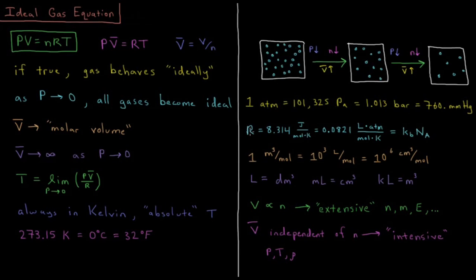For our gas constant, R in SI units, that's equal to 8.314 joules per mole Kelvin. So energy per mole particles per unit temperature.